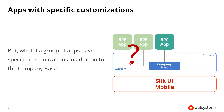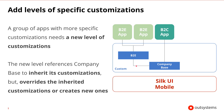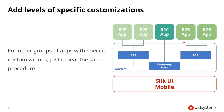But what if a group of apps have specific customizations in addition to the company base? In that case, a group of apps with more specific customizations should have a new level of customization. That new level references the company base to inherit its customizations, but then overrides the inherited customizations or can create new ones. For other groups of apps that require different customizations, like a set of B2B apps, just repeat the same procedure.